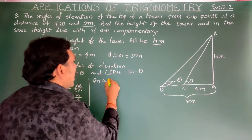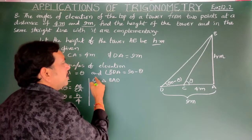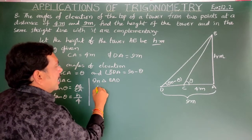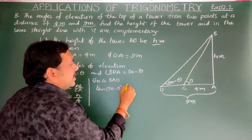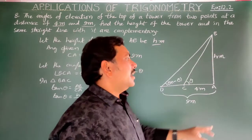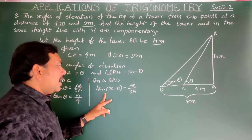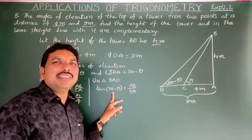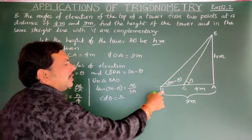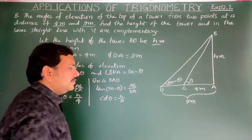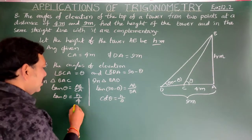All are right-angle triangles. In triangle BAD, the angle is 90 minus theta. So tan(90 minus theta) = AB by DA. Now tan(90 minus theta) is cot theta, so cot theta = h/9. This is equation number two.